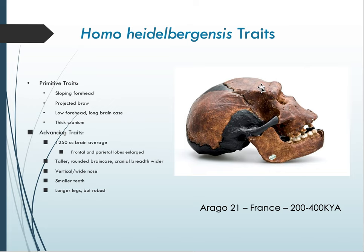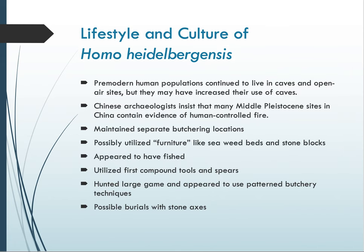The parietal lobes are on the top of the skull and are responsible for a number of non-auditory, non-visual senses, and those areas appear to be enlarged in this species. The brain case itself is taller and slightly more rounded, and the width of the brain is wider as well. The nose is finally vertical and quite wide, teeth are continuously less specialized, and Homo heidelbergensis is getting larger and taller, though still a little robust.